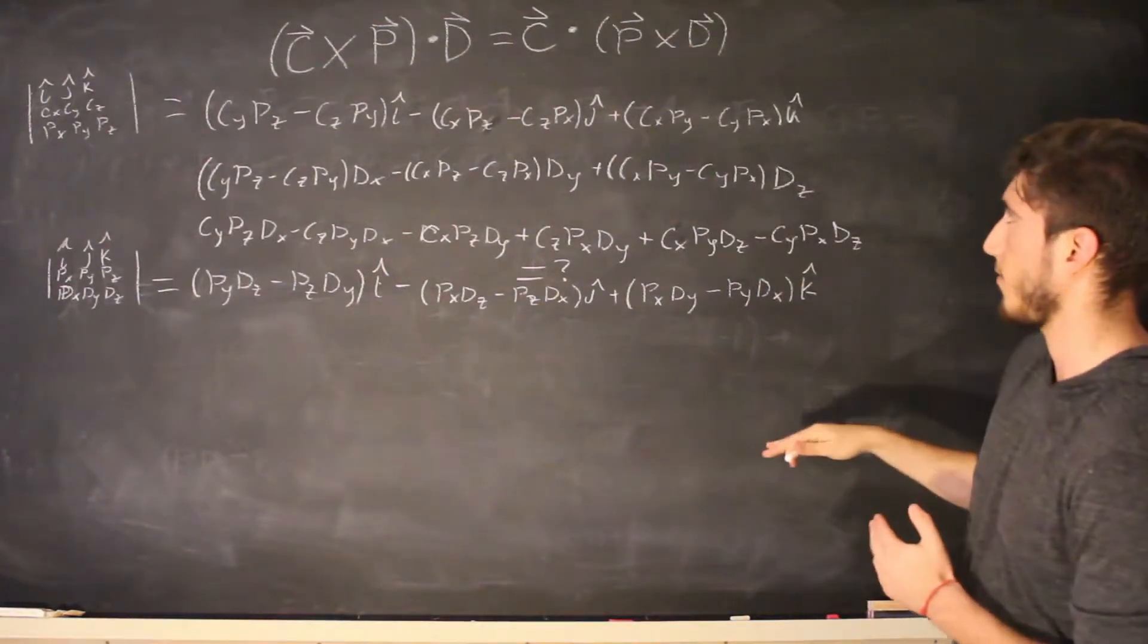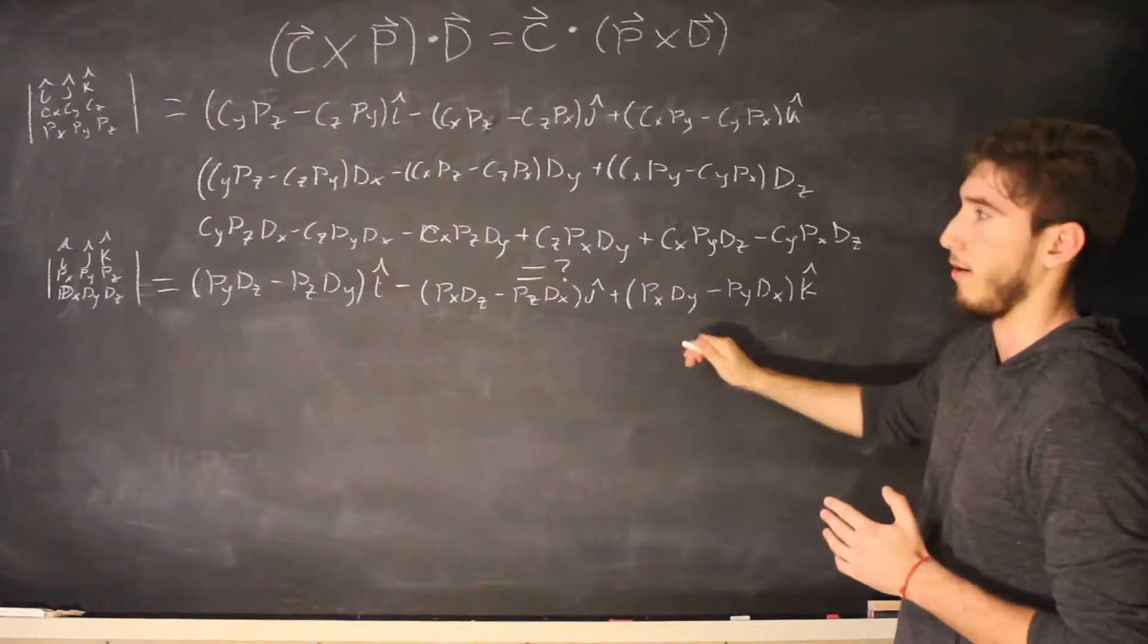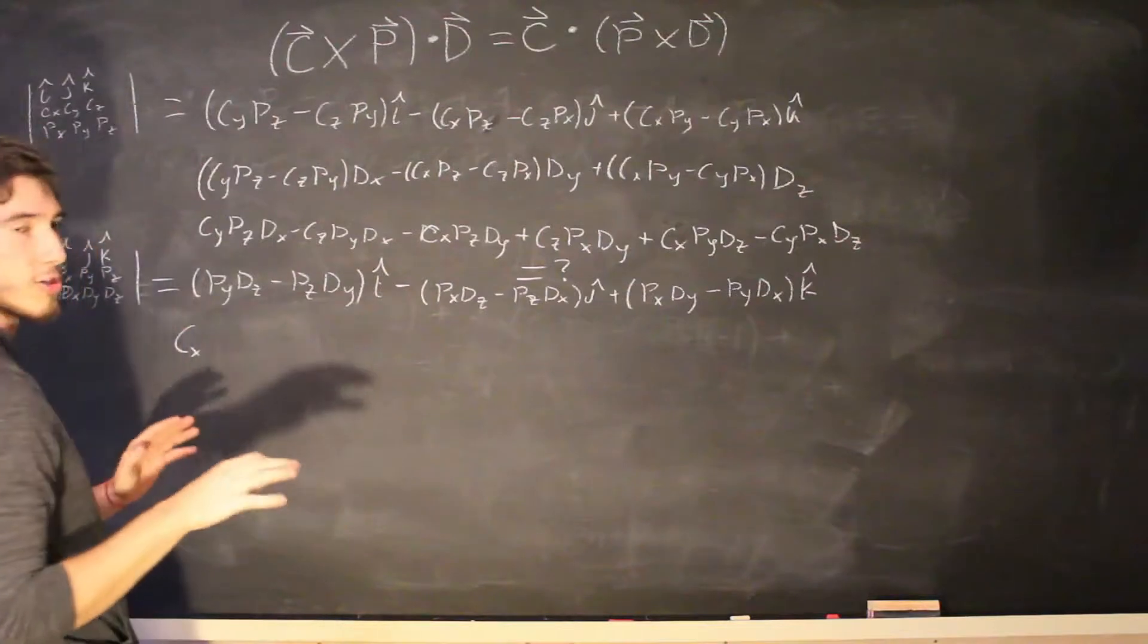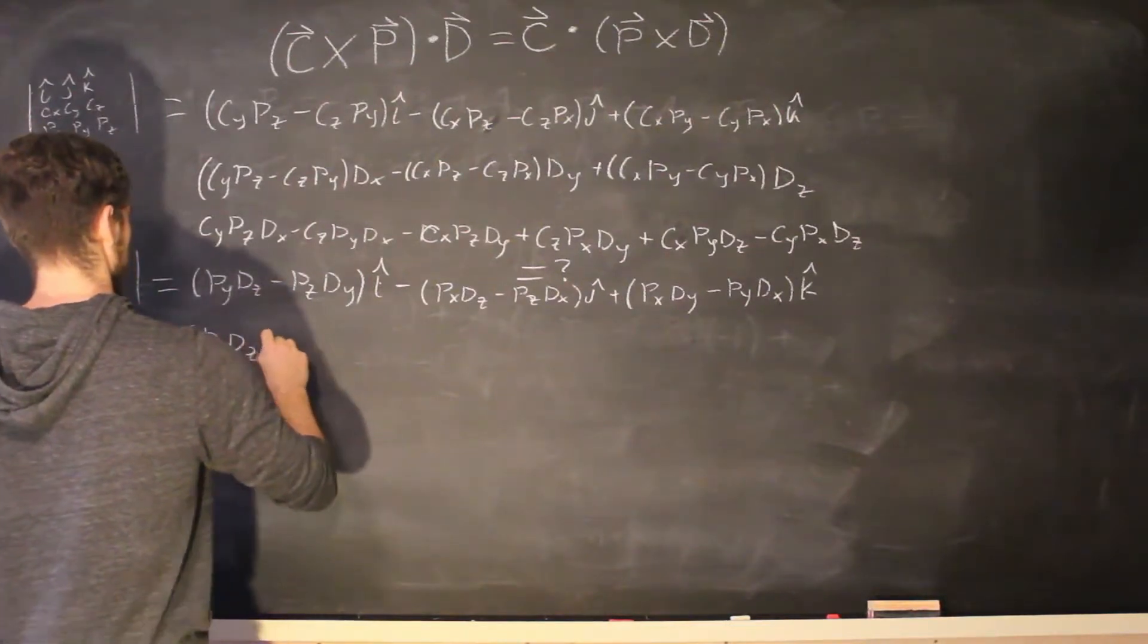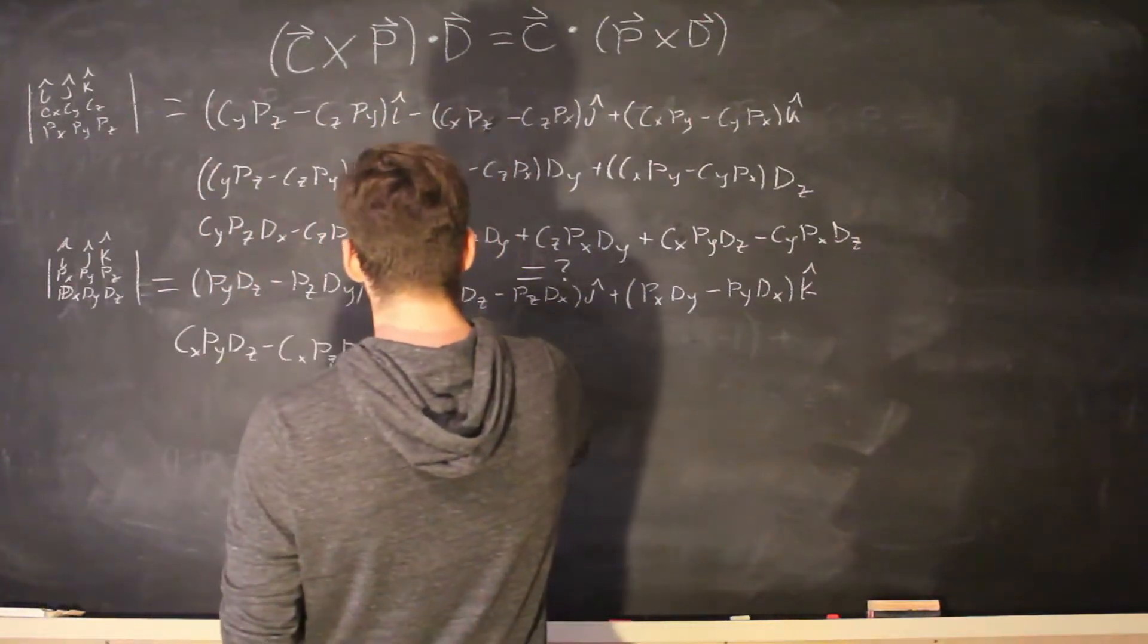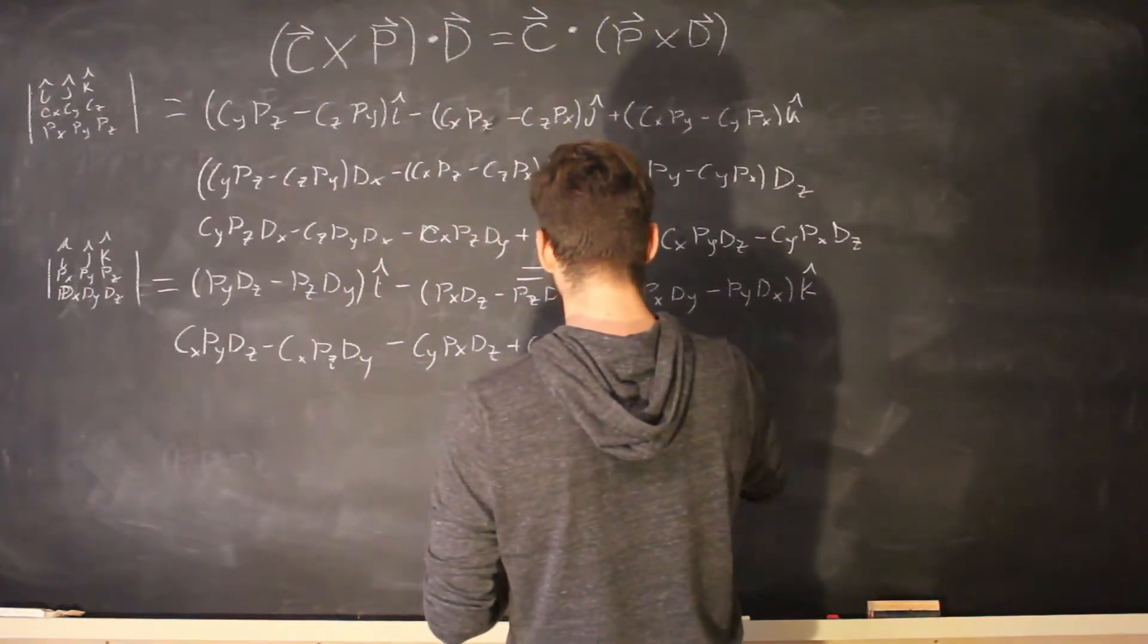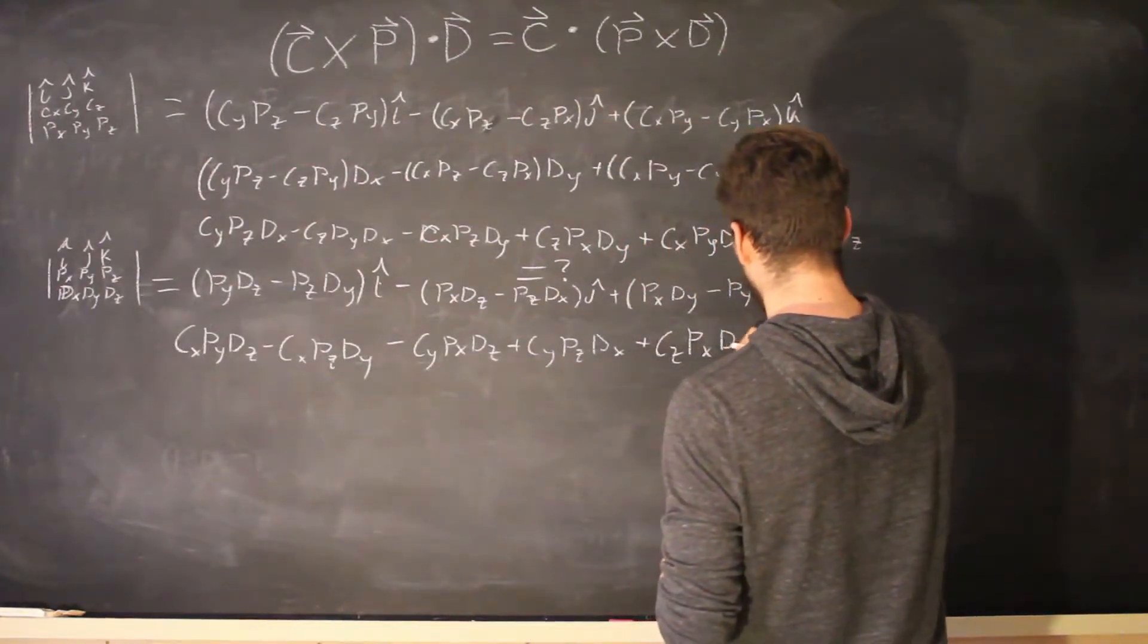and now we're going to do the dot product between the vector c and this new cross product of ours and again we're just going to distribute each of the components of c to the same components of this cross product here so we're going to end up having CX and I'm actually just going to distribute it right now and then we can jump right to it PY DZ minus CX PZ DY minus CY PX DZ plus CY PZ DX plus CZ PX DY